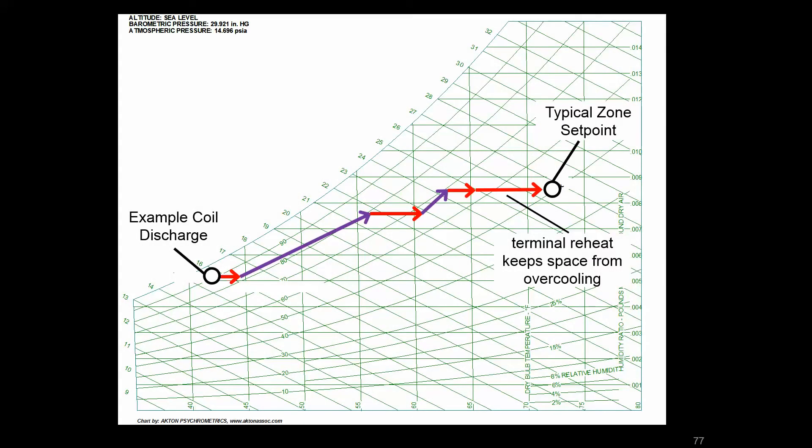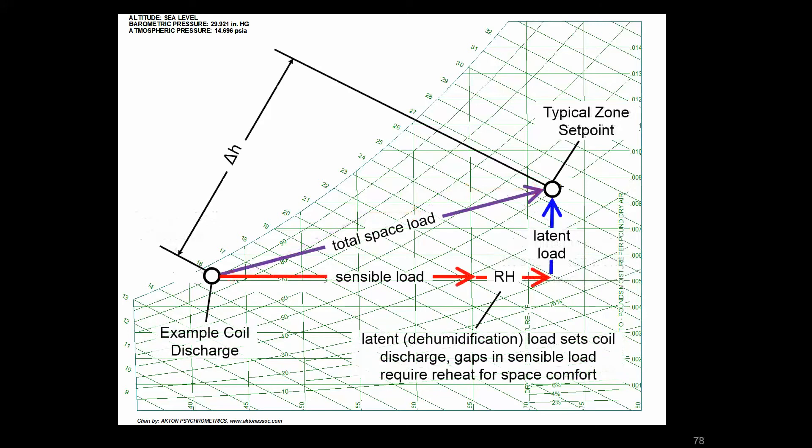Last time we looked at what an example load process may be, how a zone sees different components of the load, and how that gets you from where you have a conditioned area to what it looks like at the set point. There's a total enthalpy associated with that load, and some of it's going to be sensible, latent, and in our case we had some reheat after a cooling process.